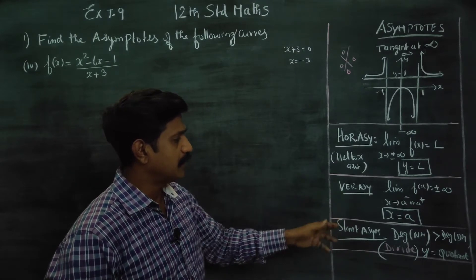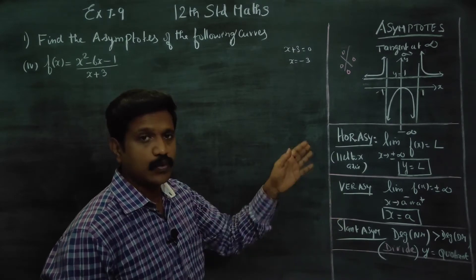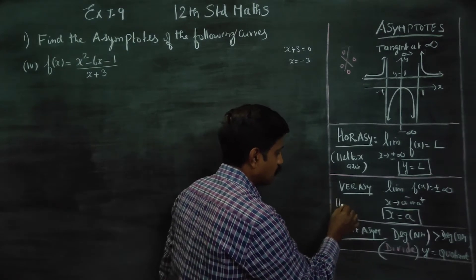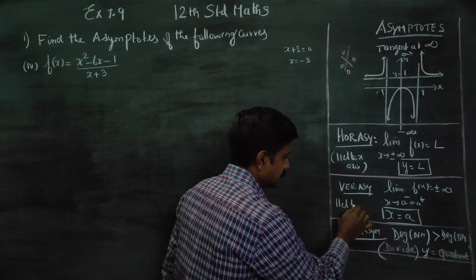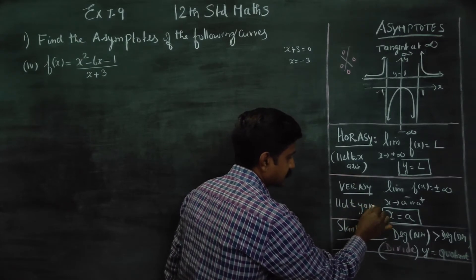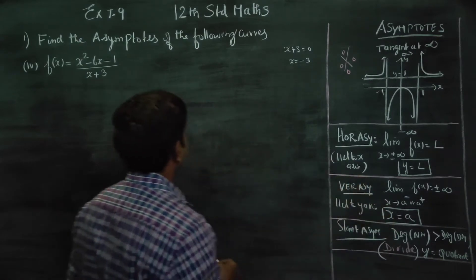The vertical asymptote will be parallel to the y-axis. It is always parallel to the y-axis. Fine.